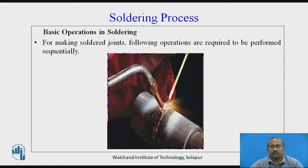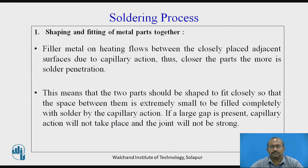Let us go with the soldering process itself. Basic operations in soldering: for making a soldered joint, the following operations are required to be performed in a sequential manner. This image typically reflects the soldering process in real time, where heat addition is carried out through a heat source and filler material is filled between the gap of two base metal pieces. Soldering process — step one: shaping and fitting of metal parts together.